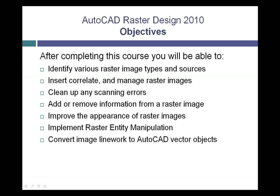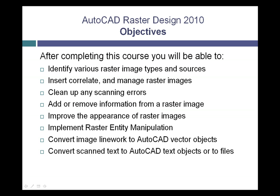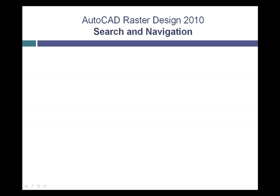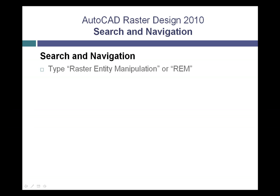You'll learn how to convert various portions of a raster image to native AutoCAD vector objects such as lines, polylines, or arcs. You'll also learn how to convert any text within an image to AutoCAD text objects, or you can export these to any word processing or spreadsheet file type. Built into this program is a search and navigation tool that allows you to type in any keyword or any variation on a specific keyword, and it will return the topics relating to that keyword directly.